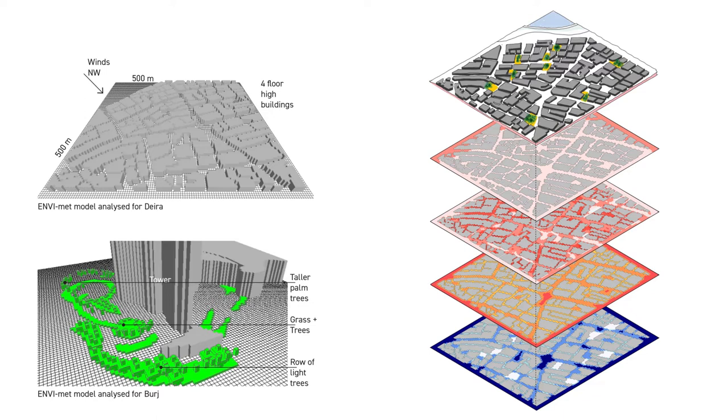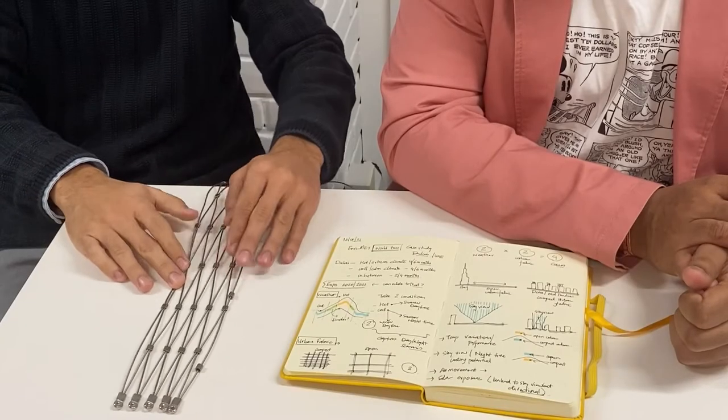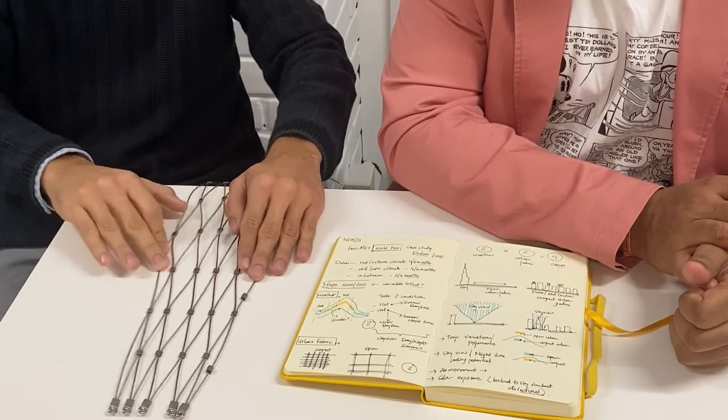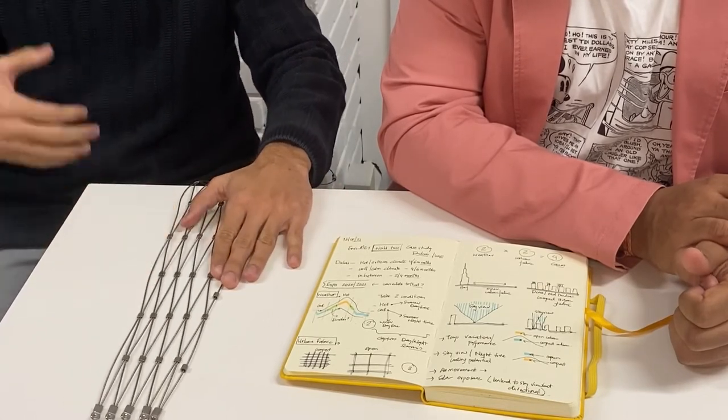We actually defined that something in between those two different densities, something that wouldn't be so tight but not so loose, it would be something in the middle, would be the best point to start.